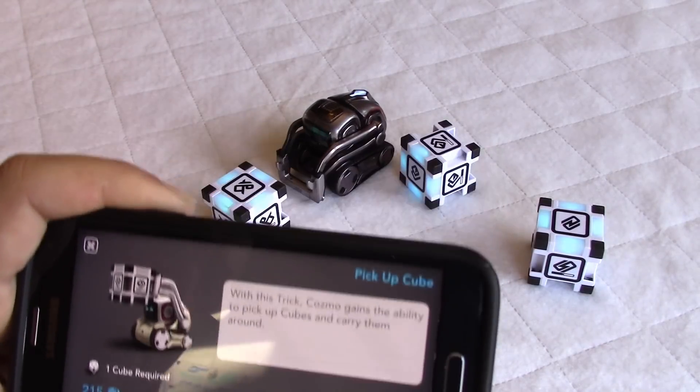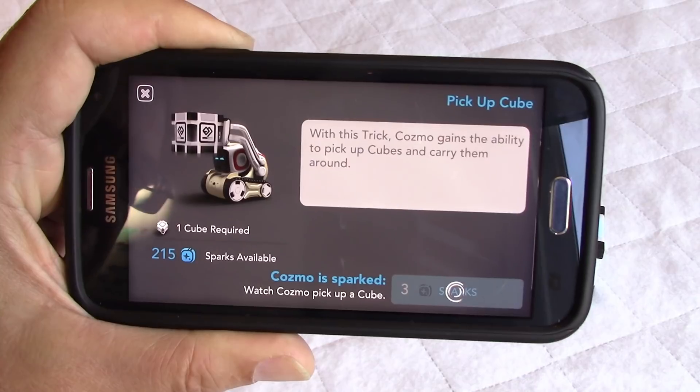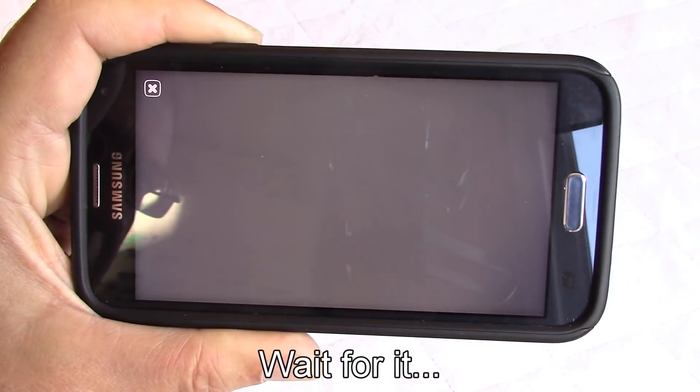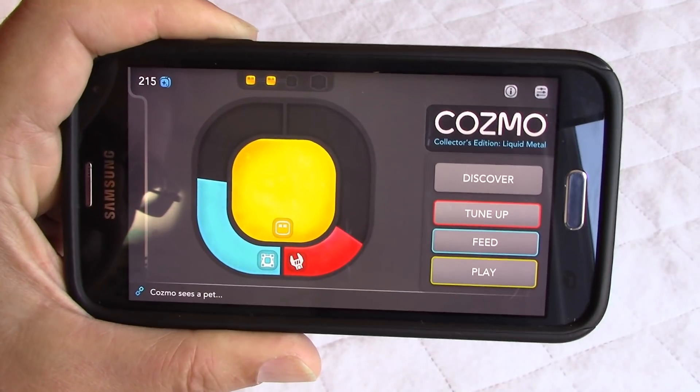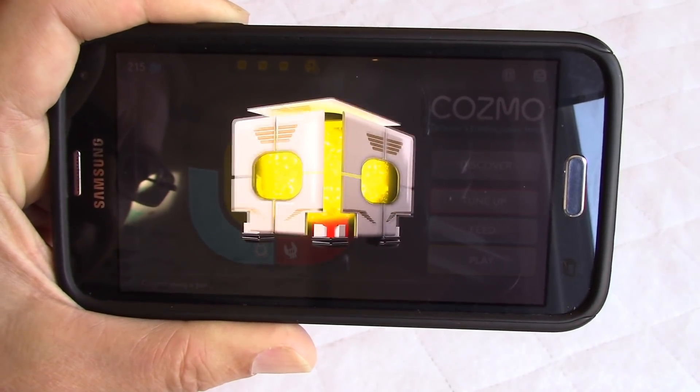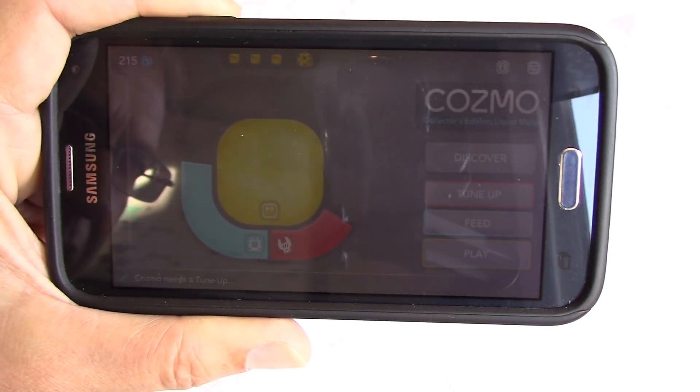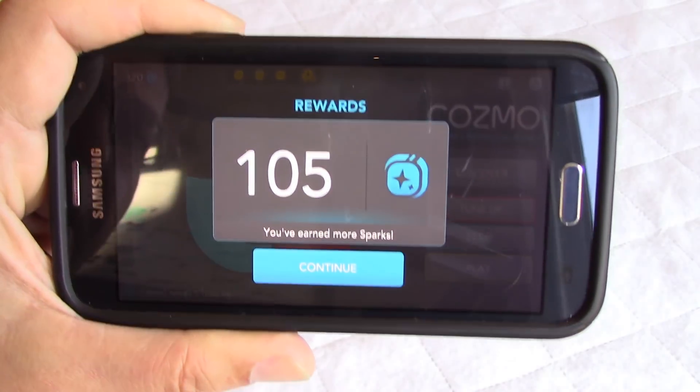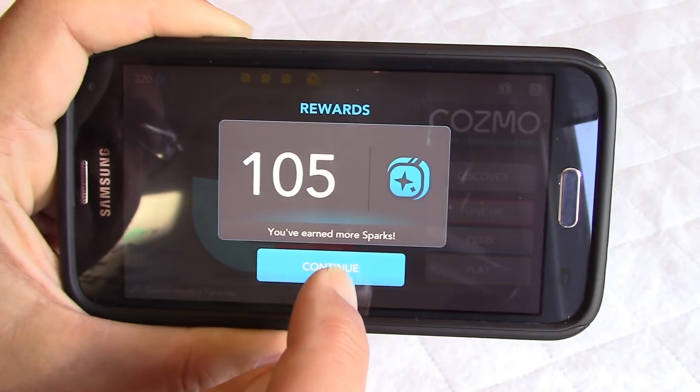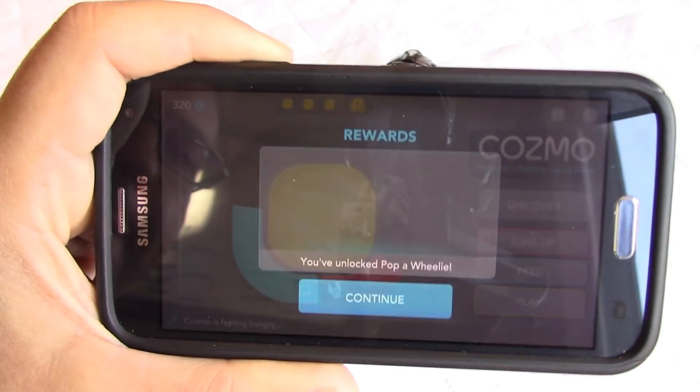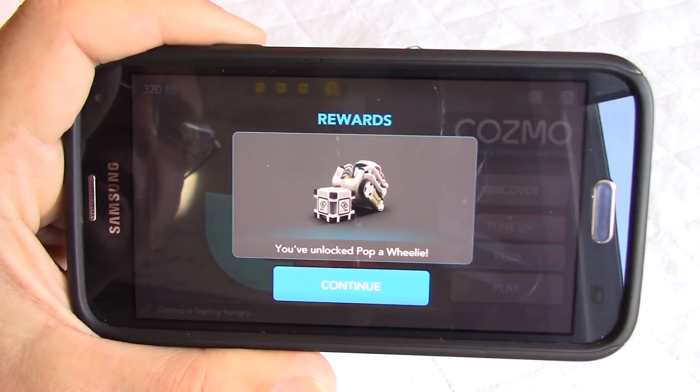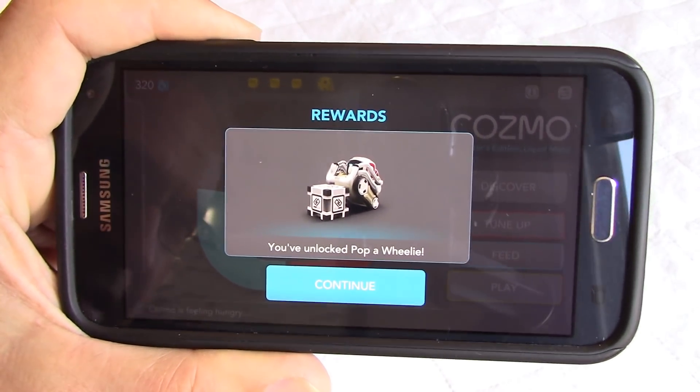So we'll see here what happens. This will be completed in a few seconds. He's happy. And now look at the yellow bar. Look at this! So we are unlocking something. We have earned 105 sparks. Tap on continue. Oh, we have unlocked a nice feature: pop a wheelie! Oh that's interesting.